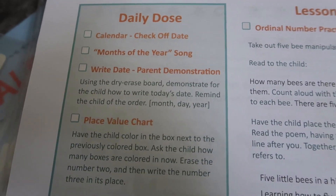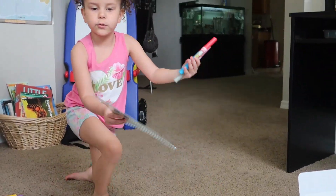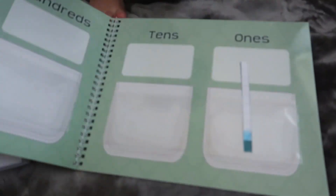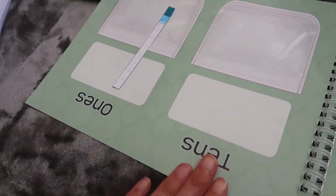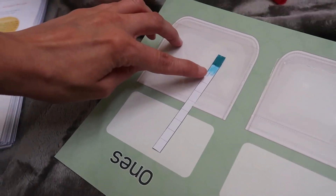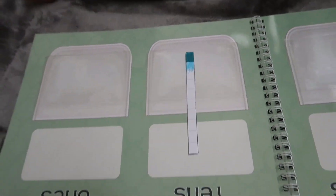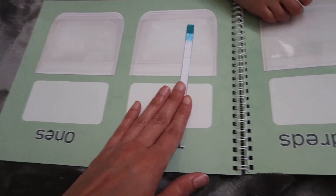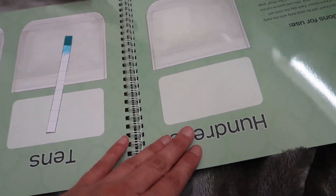We didn't do the place value chart yet, so let's do that. Grab your place value chart and a marker. So we've done one, two days of school. Now we need to color one more, and we keep it in the ones place. This is the tens place. One, two, three, four, five, six, seven, eight, nine, ten — when it's all colored, we move it into the tens place. And when we get ten tens, we move it into the hundreds place, because ten tens is a hundred.